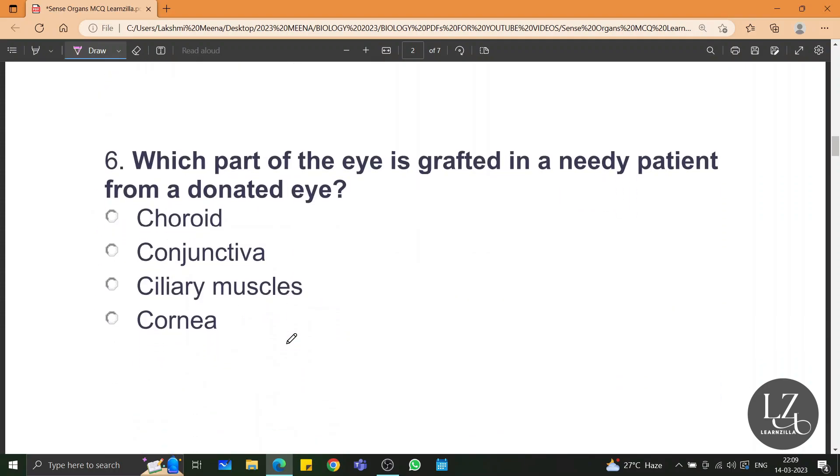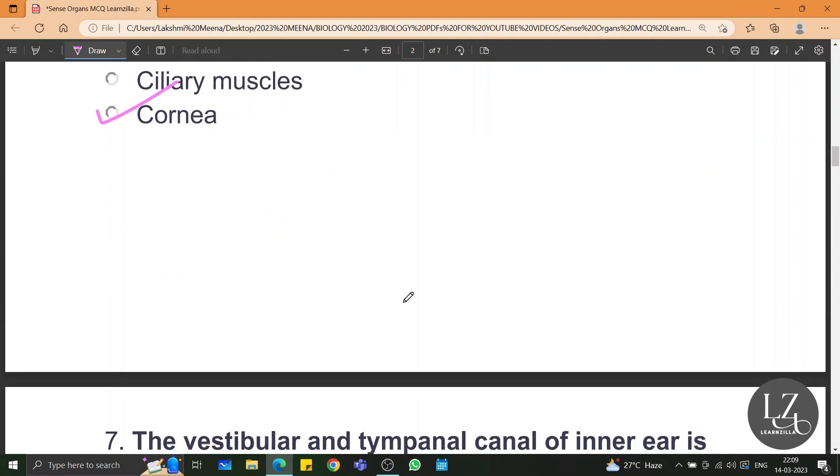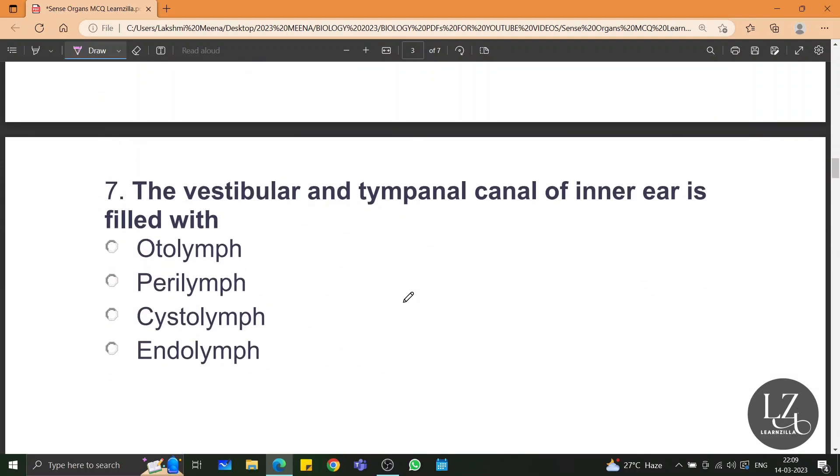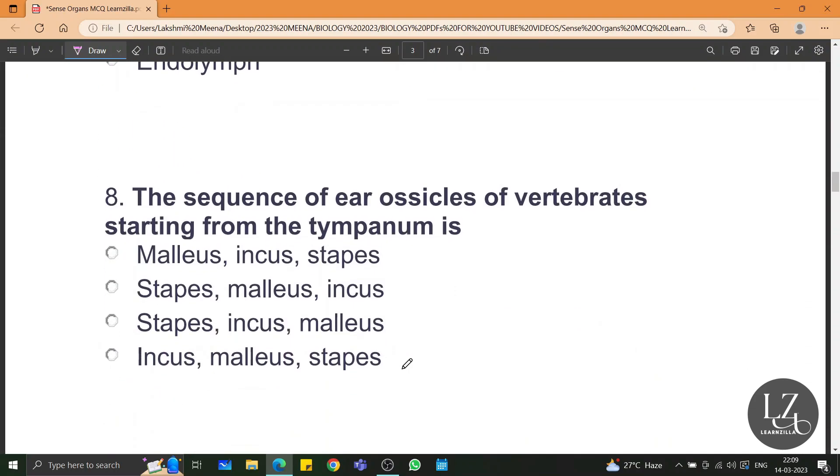Which part of the eye is grafted in a needy patient from a donated eye? Cornea is collected and grafted. The vestibular and tympanal canal of inner ear is filled with the perilymph. The sequence of ear ossicles or the smallest bones in our body starting from the eardrum or tympanum is malleus, incus and stapes.